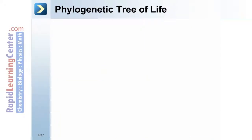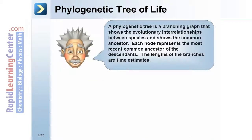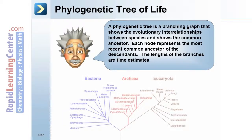A phylogenetic tree is a branching graph that shows the evolutionary relationships between species and shows the common ancestor. Each node represents the most recent common ancestor of the descendants, and the lengths of the branches are time estimates.